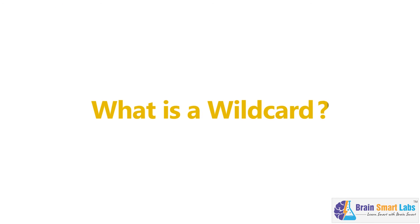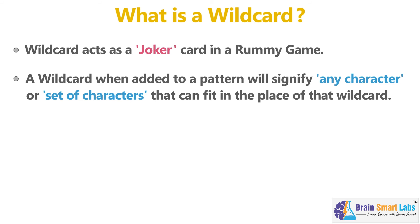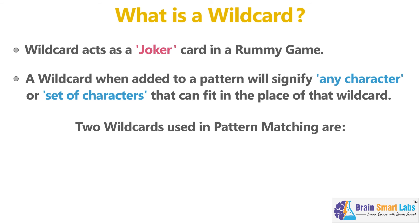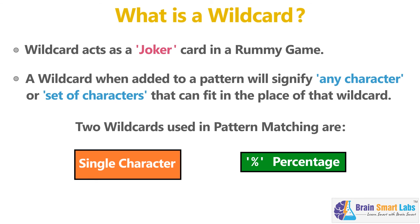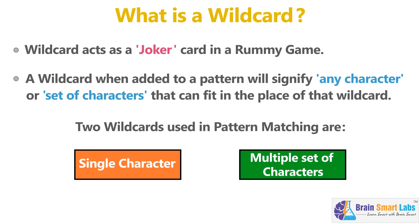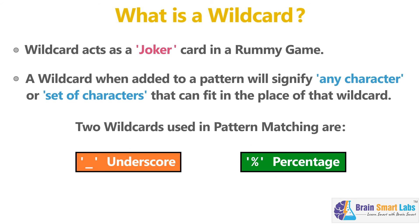A wildcard acts like a joker card in your Rummy game. When added to a pattern, a wildcard will signify any character or set of characters that can fit in that place. In SQL, there are two kinds of wildcards used in pattern matching: the underscore (_) and the percentage symbol (%). An underscore matches with a single character, whereas the percentage symbol matches with multiple sets of characters. If you understand how to use these two symbols, you are a pro in pattern making and matching.